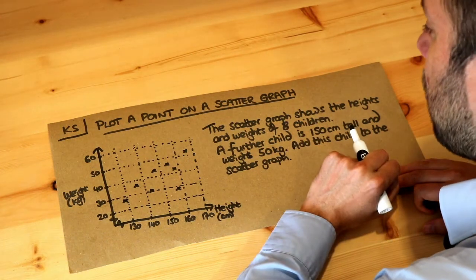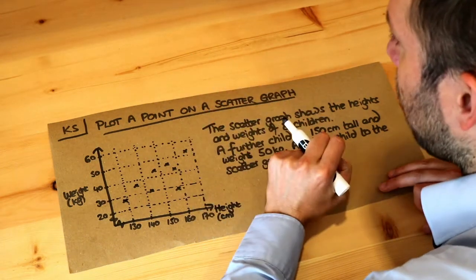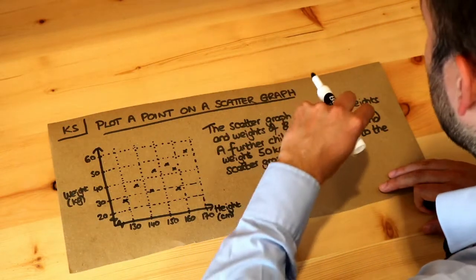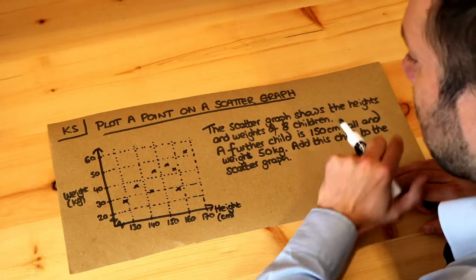Now what a scatter graph allows us to do is plot a bunch of data points where each data point might represent a plant, a child, a cat, or whatever. In this case we're talking about children.